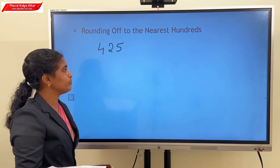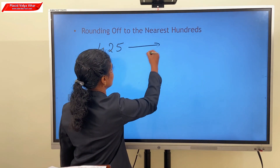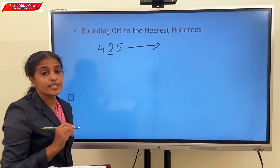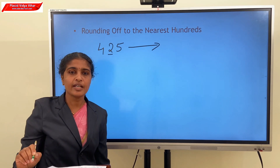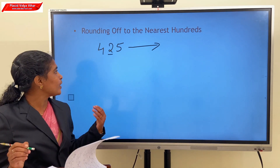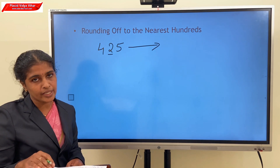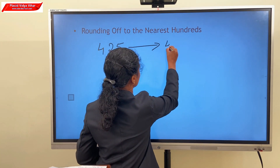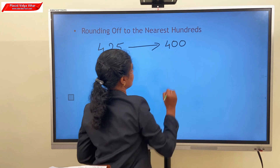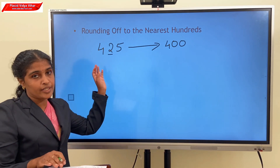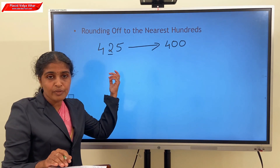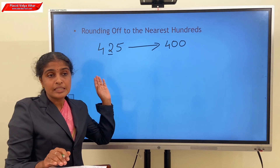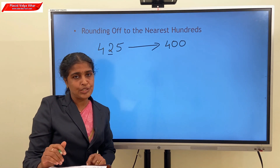Consider the example 425. Here the tens digit is 2, which is less than 5. So we round off the number to 400. There is no change in the hundreds place when the tens digit is less than 5, and the tens and ones places become 0.